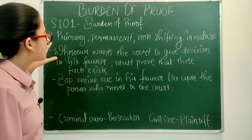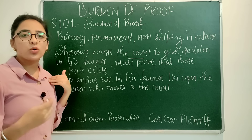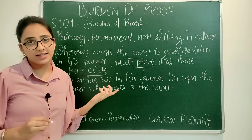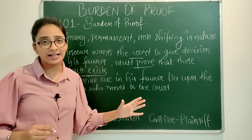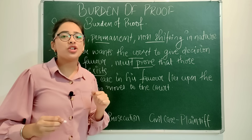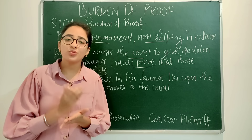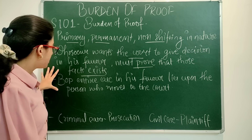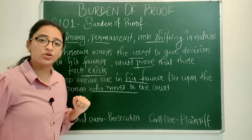Section 101 states that whosoever wants the court to give a decision in his favor must prove that those facts exist — he must prove the existence of facts. He will carry the initial burden of proof. This burden of proof is primary, permanent, and non-shifting in nature — it never shifts. This burden of proof will always remain with that party who is approaching the court and who wants judgment from the court. The burden of proving an entire case in his favor lies upon the person who moves to court.